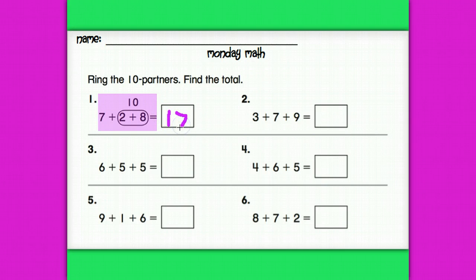Okay. So for every one of these other problems, I need to see a ring to show me that you made a 10 and then add your 10 plus your remaining addend to get your total. Okay.